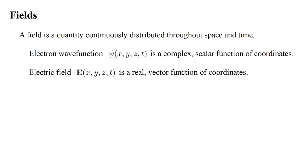The electric field, of classical electromagnetic theory, is an example of a real vector function of coordinates. Vector means that the field has both an amplitude and a direction.